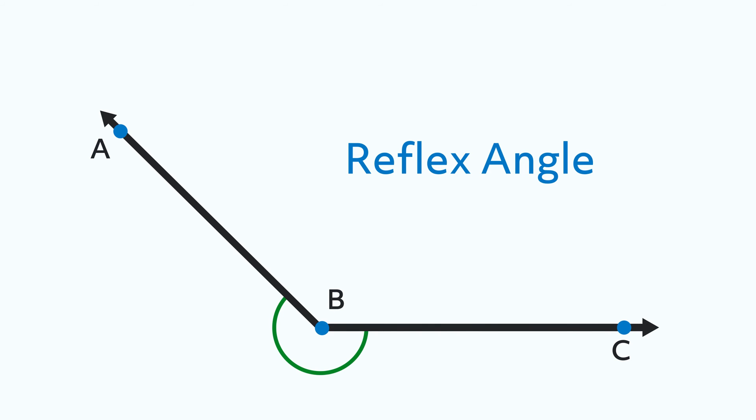This is called a reflex angle. It's always more than 180 degrees and less than 360 degrees. Every acute, right, and obtuse angle has a reflex angle.